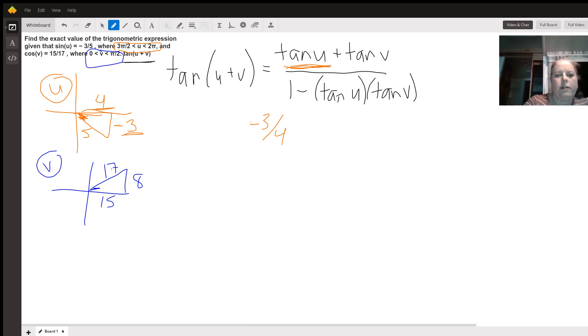And then for tangent of v, we're going to use our v triangle. And again, opposite over adjacent. So we would get 8 over 15.